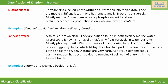Diatoms have a cell wall containing silica. It is in the form of two overlapping cells which fit together like two parts of a soap box or the plates of a petri dish. Diatoms are very hard. As a result, diatomaceous earth formation has occurred due to the remains of the cell walls of diatoms in the form of fossils. Their examples are diatoms and desmids.